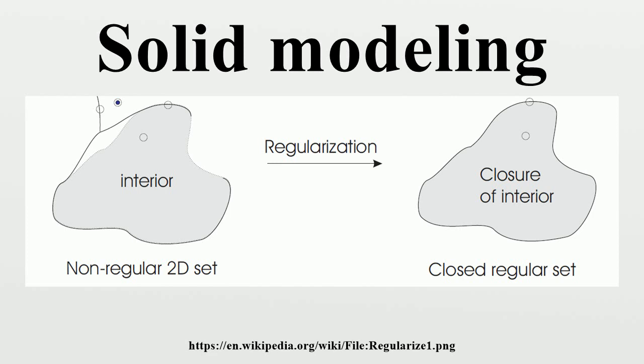Constructive solid geometry (CSG) connotes a family of schemes for representing rigid solids as Boolean constructions or combinations of primitives via the regularized set operations. CSG and boundary representations are currently the most important representation schemes for solids. CSG representations take the form of ordered binary trees where non-terminal nodes represent either rigid transformations or regularized set operations. Terminal nodes are primitive leaves that represent closed regular sets. Each subtree represents a set resulting from applying the indicated transformations and regularized set operations on the set represented by the primitive leaves of the subtree.